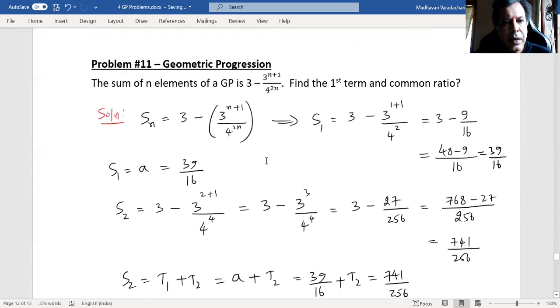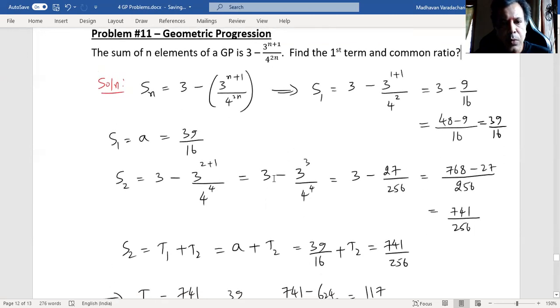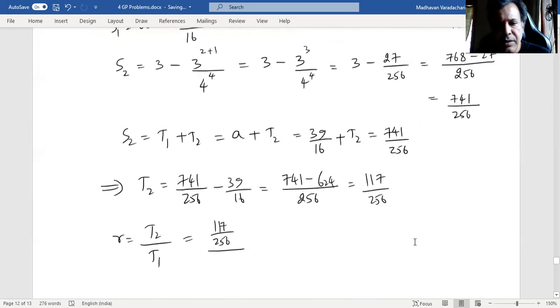If I divide term 2 and term 1, term 2 divided by term 1 is 117 by 256 divided by term 1, which is 39 by 16.